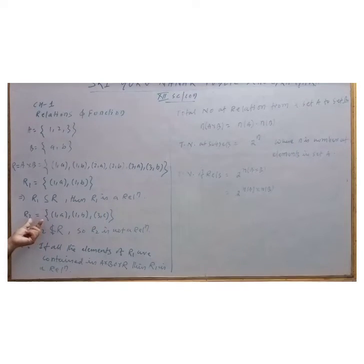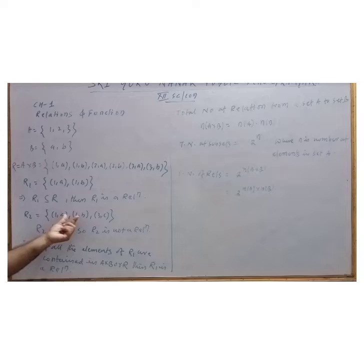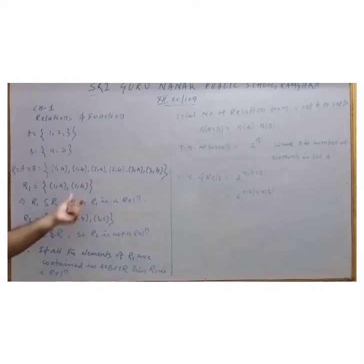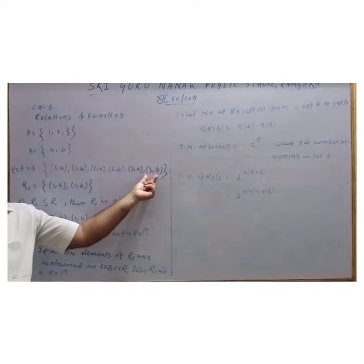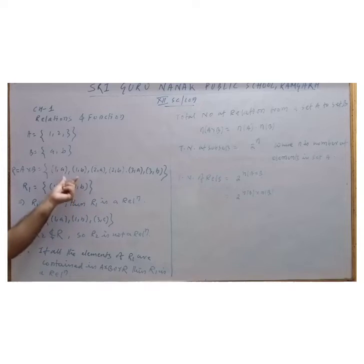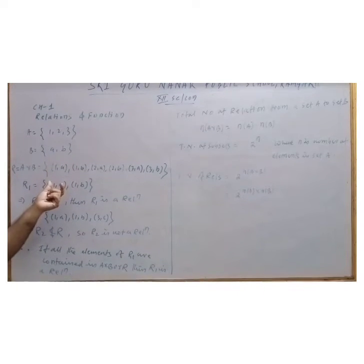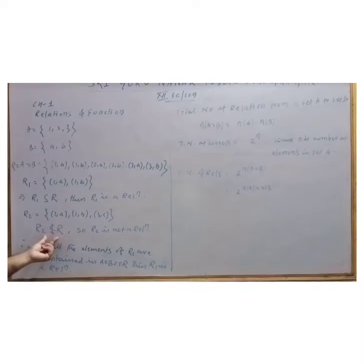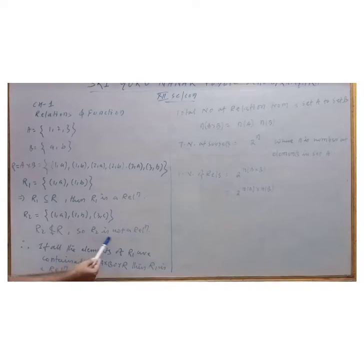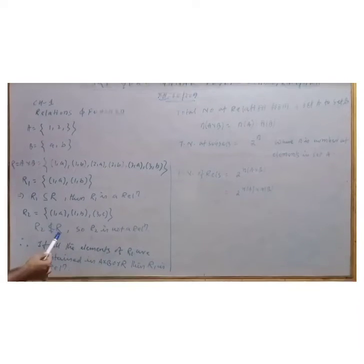Let us take second example R2: {(1,a), (1,b), (3,c)}. Do you find (3,c) here? No. So we say that all the elements of R2 are not there in R. So this is not a subset. R2 is not a subset, so R2 is not a relation.